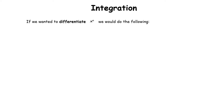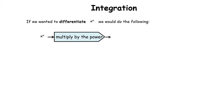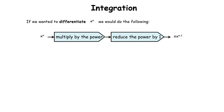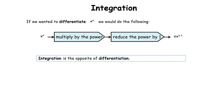If I wanted to differentiate x to the power of n, we bring down the power and take away 1 from the power. So x to the power of n becomes n times x to the power of n minus 1. We multiply by the power and reduce the power by 1.